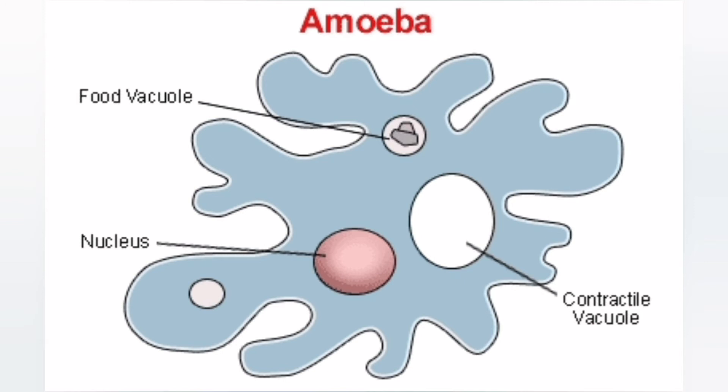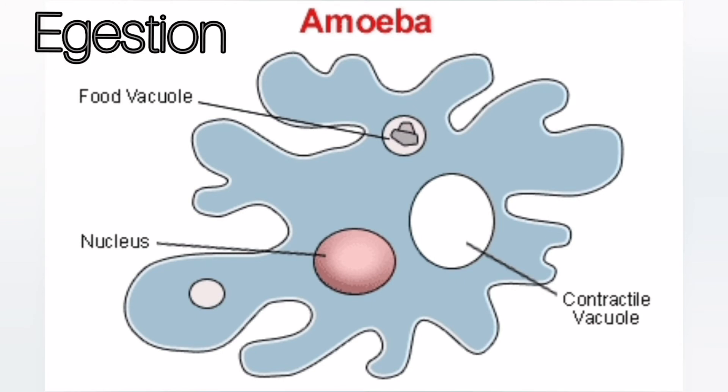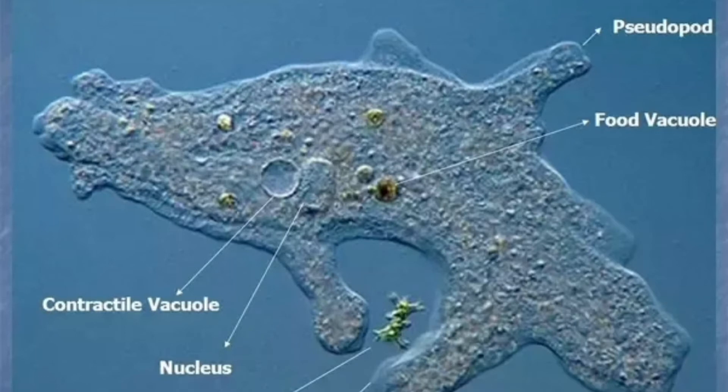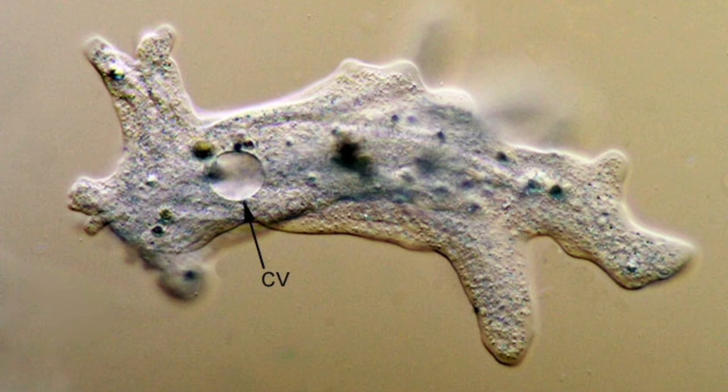Finally, the fifth step is egestion. The food vacuole containing undigested food fuses with the surface membrane and discharges its contents outside the body, and then disappears. This process is called egestion.